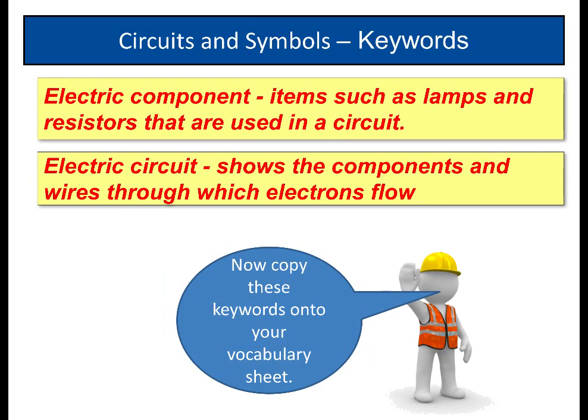Now, we need a couple of key words here. So, a component, electrical component, it's items such as lamps and resistors that are used in circuits. And electric circuit shows components and wires through which electrons flow. It's important to start keeping a record somewhere of these key words. So, I suggest you start yourself a vocabulary sheet and copy these key words onto it.